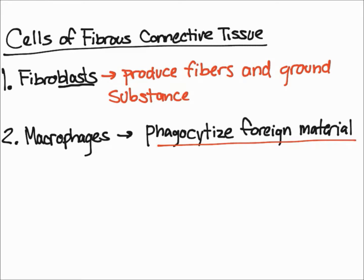The next type of cell are macrophages. It's important to remember that macrophages are not only found in fibrous connective tissue — they are large phagocytic cells, which means they engulf and essentially destroy anything your body doesn't need, such as foreign material. They protect your body by phagocytizing foreign material.